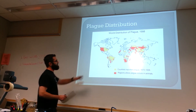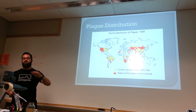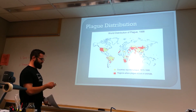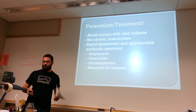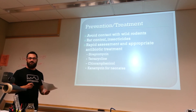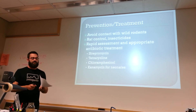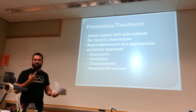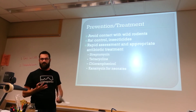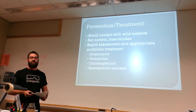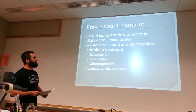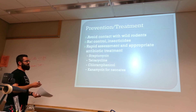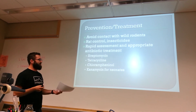Bubonic plague is still around the world — it's in wild rodent populations on the west coast of the United States, but we haven't had human-to-human spread in the US since 1925 in Los Angeles. To survive bubonic plague: avoid contact with wild rodents, and if you're a rabbit hunter, wear protective clothing when skinning. This is a Biosafety Level 3 pathogen, requiring mask, breathing device, suit, and heavy-duty gloves. Prevention also includes rat population control, and antibiotic treatment with streptomycin, tetracycline, chloramphenicol, or kanamycin for neonates.